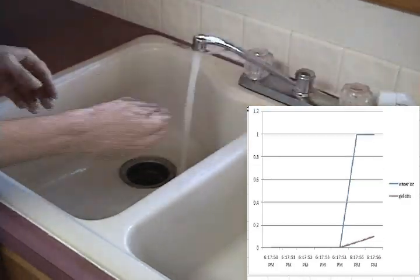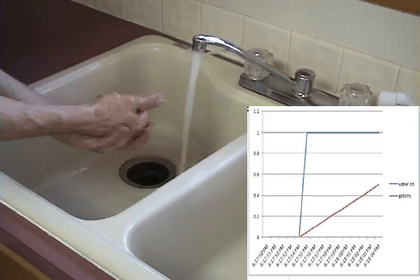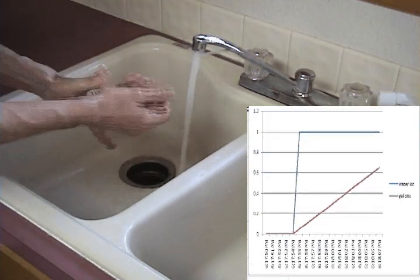Regular faucets can waste a lot of water. In this sped-up example, the blue line shows when the water is on, the red line shows the water use adding up.